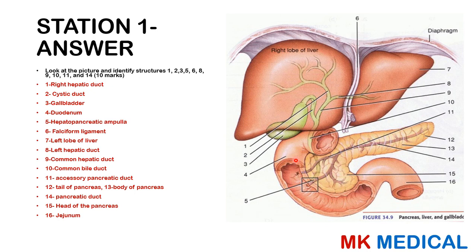So to summarize the labeled structures: part one is the right hepatic duct, part two is the cystic duct, part three is the gallbladder, part four is the duodenum, part five is the hepatopancreatic ampulla, part six is the falciform ligament dividing the right and left lobes, part seven is the left lobe of the liver, part eight is the left hepatic duct, part nine is the common hepatic duct, part ten is the common bile duct, part eleven is the accessory pancreatic duct, part twelve is the tail of the pancreas, part thirteen is the body of the pancreas, part fourteen is the main pancreatic duct, part fifteen is the head of the pancreas, and part sixteen is the jejunum.